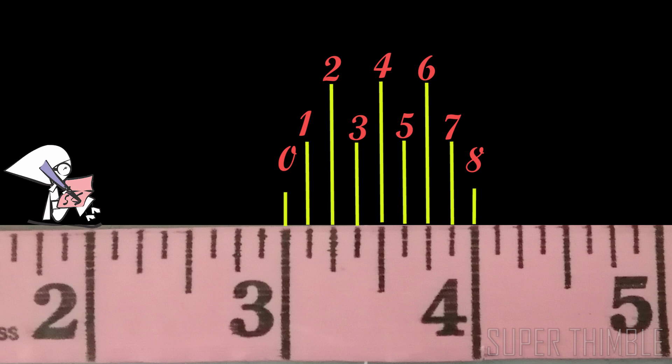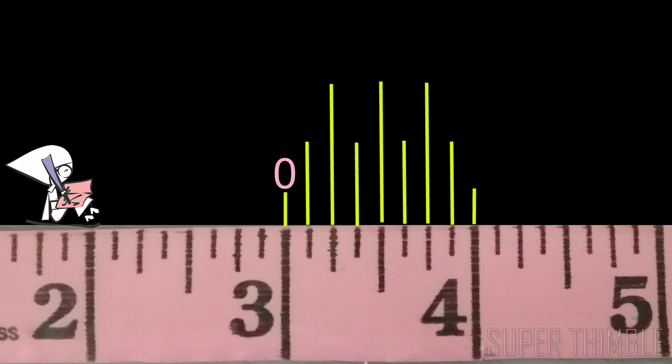Let's start with the first line. It is by default a zero. The next line is 1/8 inch, second line is 2/8 inch, which could be further divided and it becomes 1/4 inch.